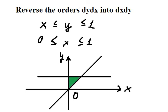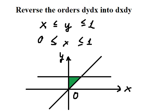Because x goes from 0 to 1, number 1 is located here. This axis here is about x, and this axis here is about y.